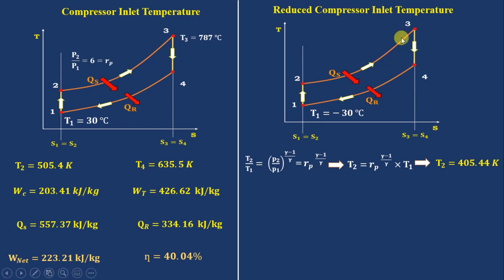You can see here, when ambient temperature is minus 30 degrees Celsius, T2 becomes 405.44. When ambient temperature is 30 degrees Celsius, T2 becomes 505.4 Kelvin. Which means there is 100 Kelvin difference. From this you can say that if ambient temperature is low, after compression temperature will be low.